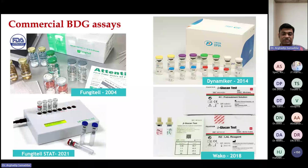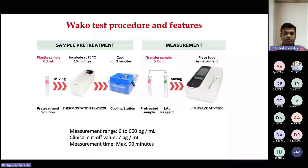Concordances and discordances exist between different beta-D-glucan platforms in different patient populations. WAKO has shown that reducing the cutoff from 11 to 7 or 3 pg/mL increases sensitivity — at 11 pg/mL sensitivity is around 60%, at 5 pg/mL it approaches 80%, and at 3–4 pg/mL it is around 82%. Standardization of assay cutoffs is very important. Fungitell demonstrates better sensitivity compared to WAKO. The measurement time for WAKO is approximately 90 minutes.